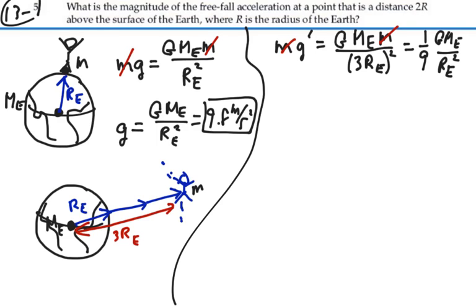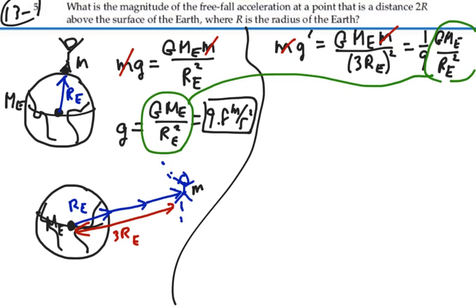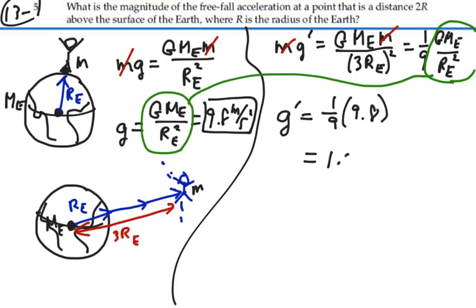We can cancel your mass on both sides. This gives us one over three squared, which is one-ninth, times G times the mass of the Earth over the radius of the Earth squared. We already know that G times the mass of the Earth over the radius of the Earth squared equals 9.8 m/s². So g-prime equals one-ninth times 9.8, which gives 1.09 meters per second squared.